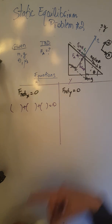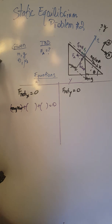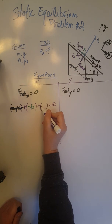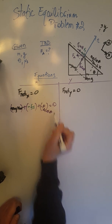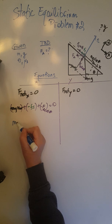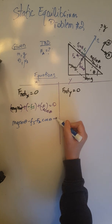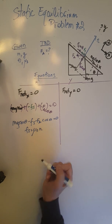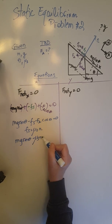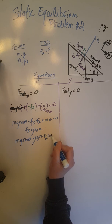The positive x-direction (down the ramp) gives us mg sine theta. In the opposite direction we have negative F_s and negative F_a cosine theta, all summing to zero. Simplifying: mg sine theta minus F_s minus F_a cosine theta equals 0. Since F_s equals mu_s times N, substituting gives: mg sine theta minus mu_s·N minus F_a cosine theta equals 0.